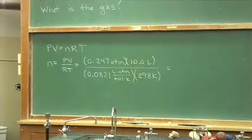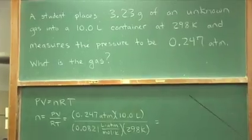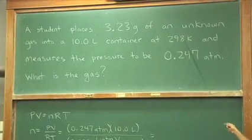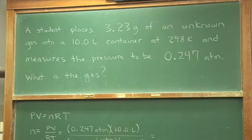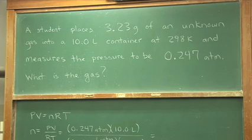Up at the top here, I've posed this little problem, and it goes that the student has placed a mass of an unknown gas inside of a flask, measures the mass of the flask before and after, so says, I've got 3.23 grams of this unknown gas. It's a 10-liter flask, so think of it as being about five 2-liter soda bottles put together.